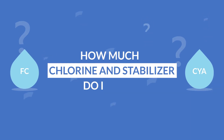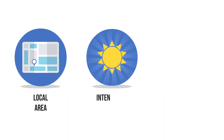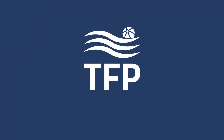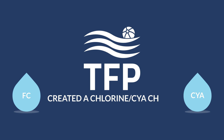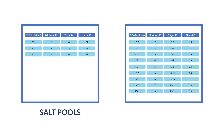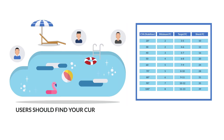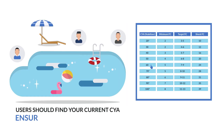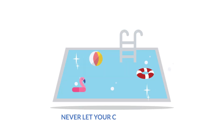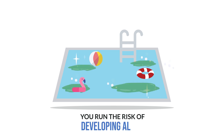How much chlorine and stabilizer do you need? It depends on your local area, intensity of sunlight, and condition of the water. To help, TFP has created a chlorine-CYA chart. There are two charts to choose from — one for salt pools and one for non-salt pools. All users should find your current CYA, then ensure your chlorine level is always in the target range. Never let your chlorine drop below the minimum amount listed, or you run the risk of developing algae.